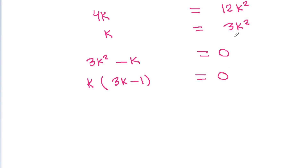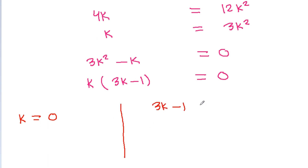So we get k is equal to 0, or 3k minus 1 is equal to 0, which gives k is equal to 1/3.